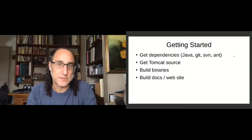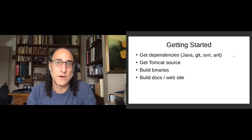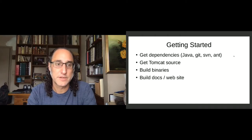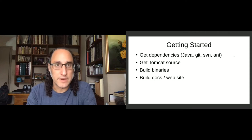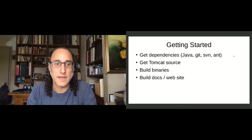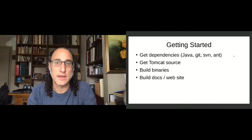You can get the Tomcat source as a single package — it comes as a tarball or as a zip package. You can build the binaries just like we would do for a normal release, and you can build the documentation and the website as well.